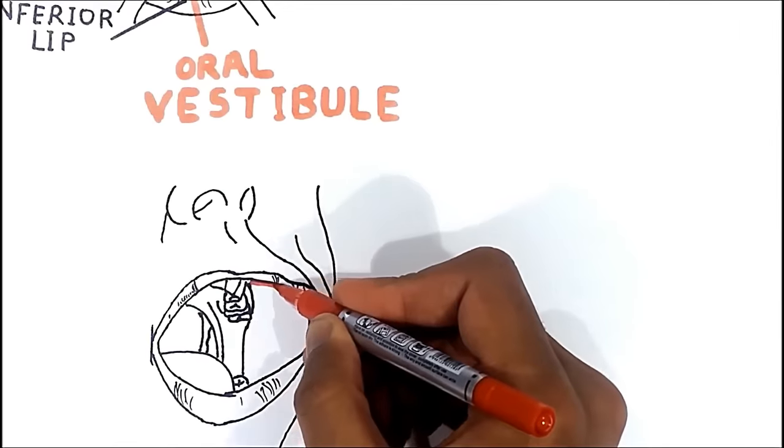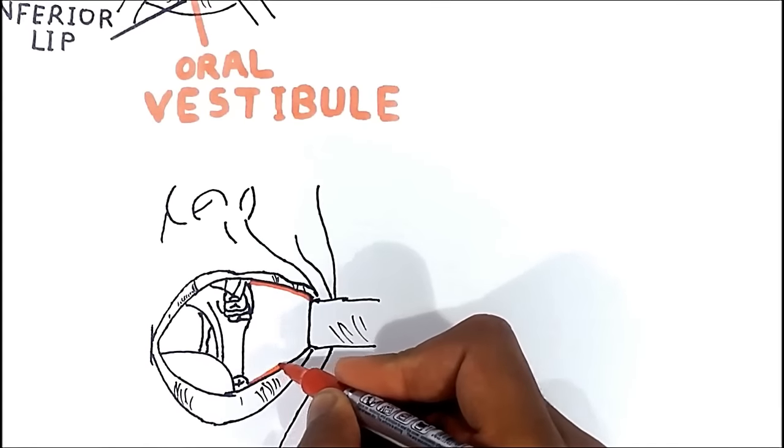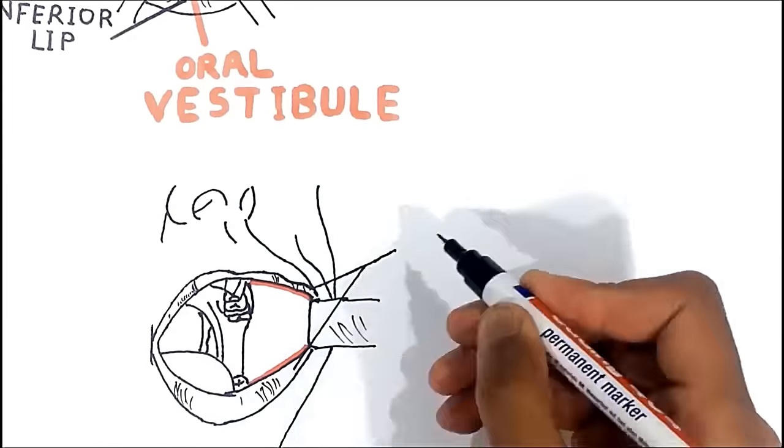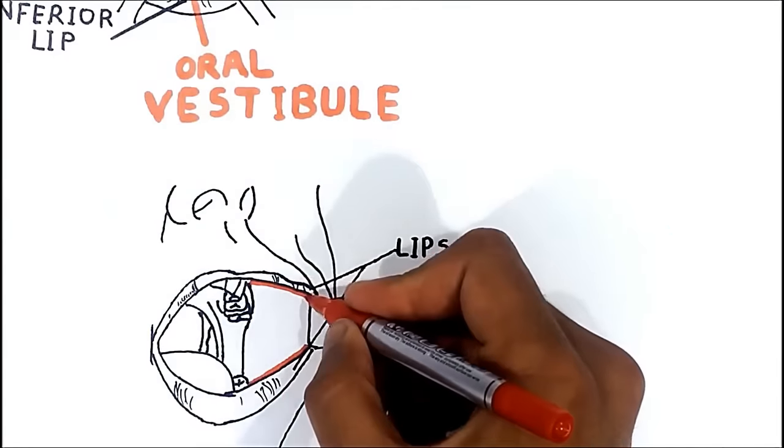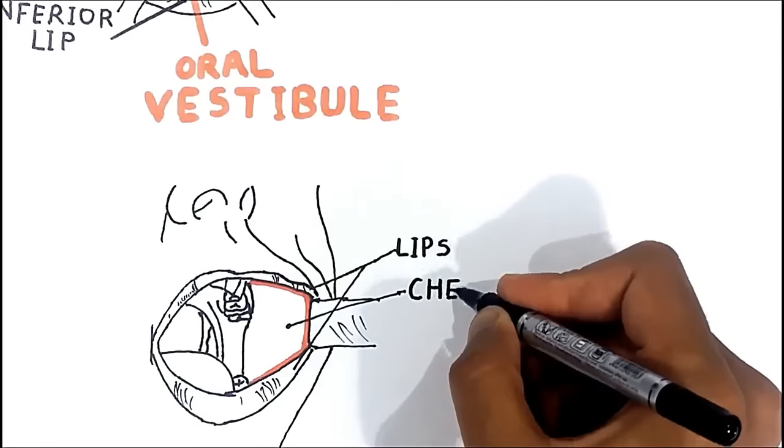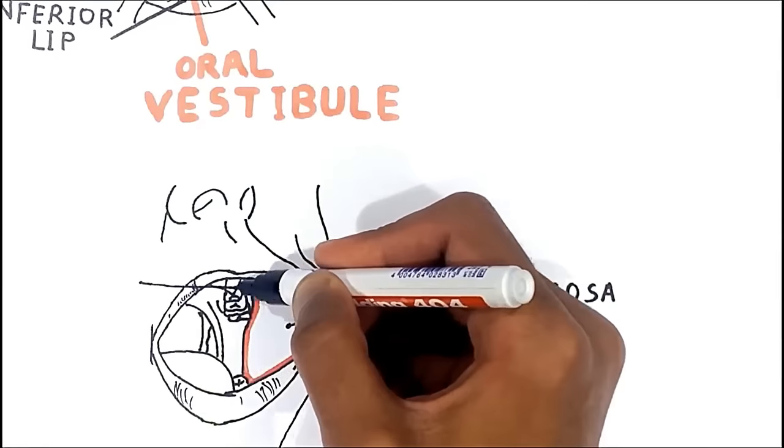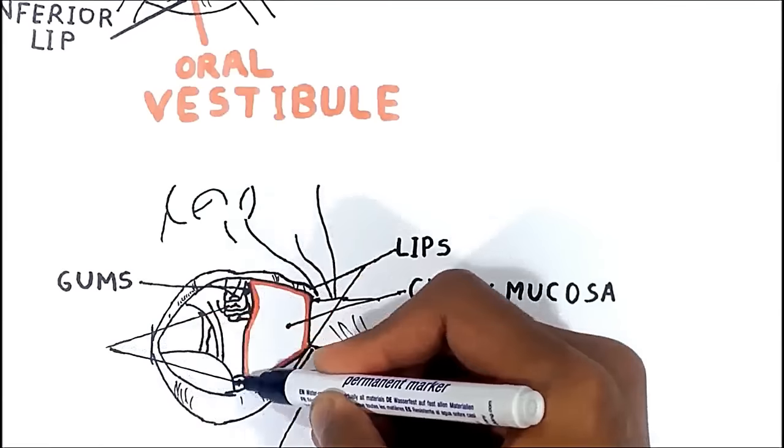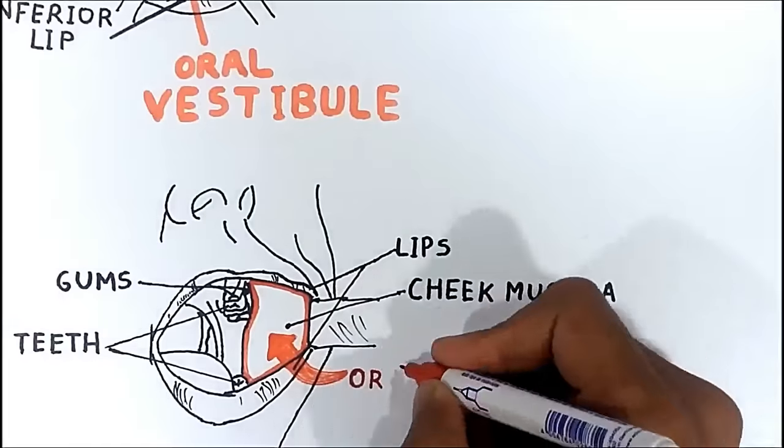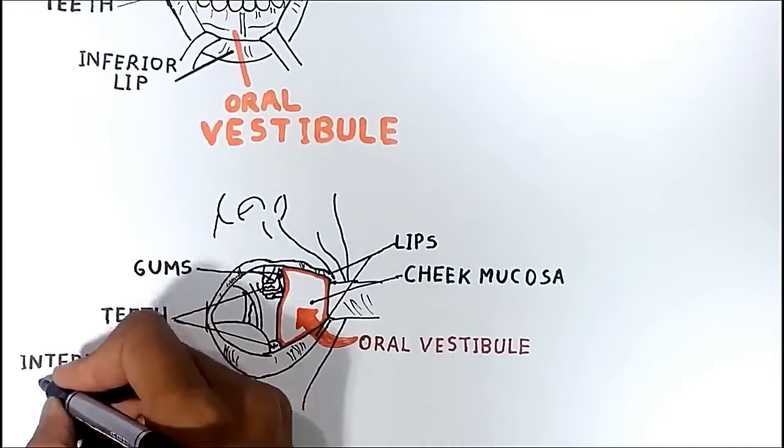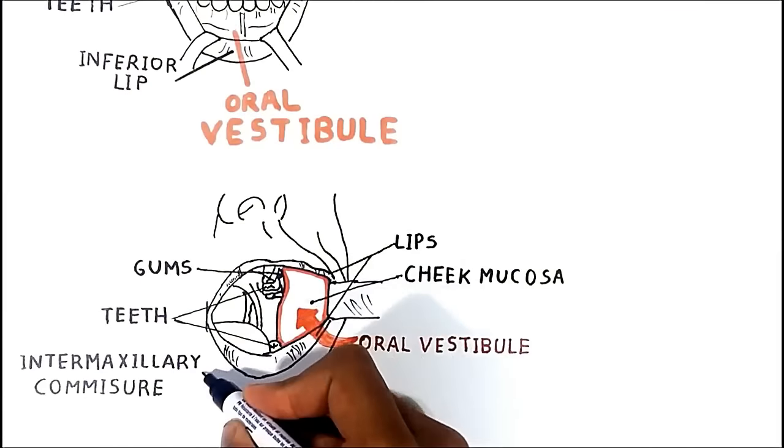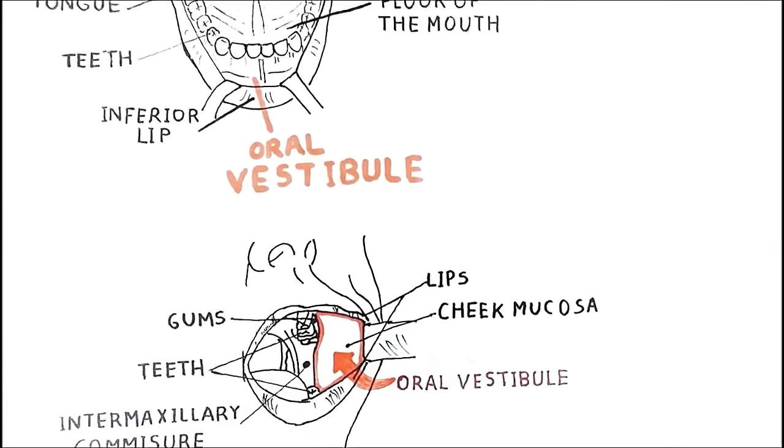In more technical terms, the vestibule is the space which is bound externally by the lips and the cheek mucosa and internally by the gums and the teeth. It extends up to the intermaxillary commissure where both vestibules meet together.